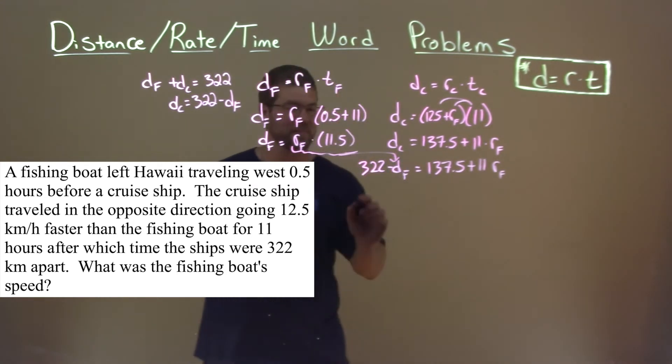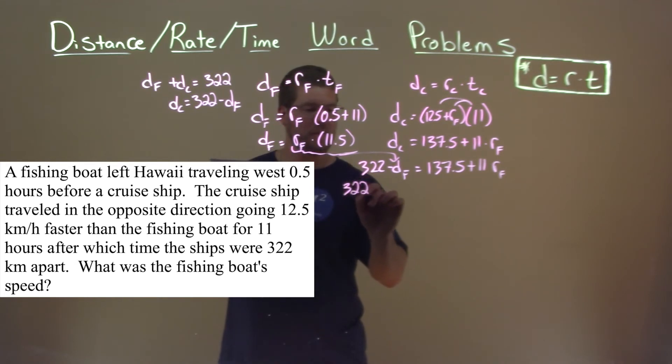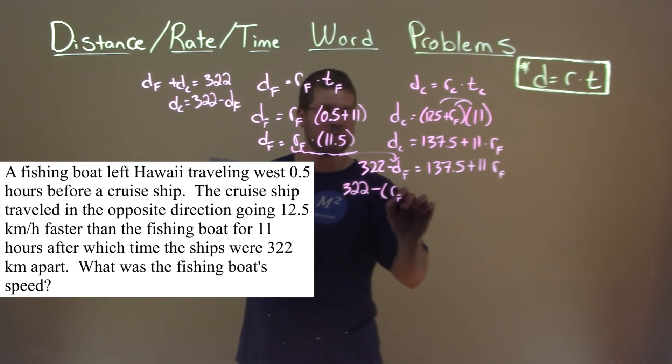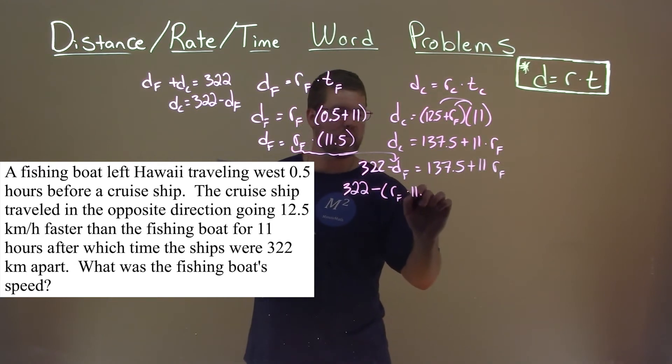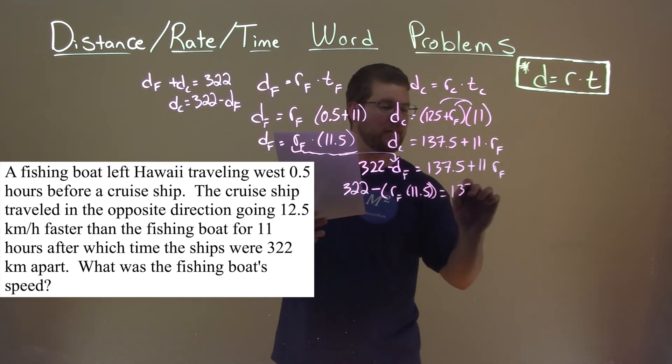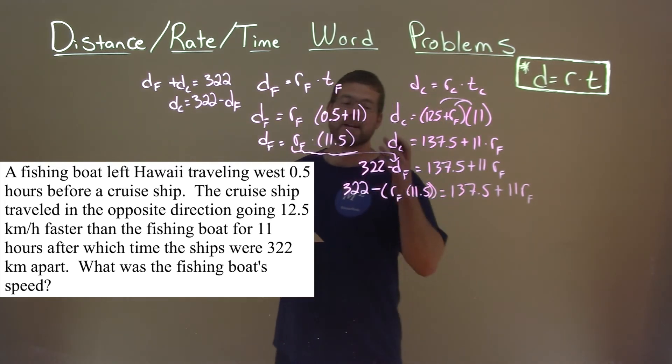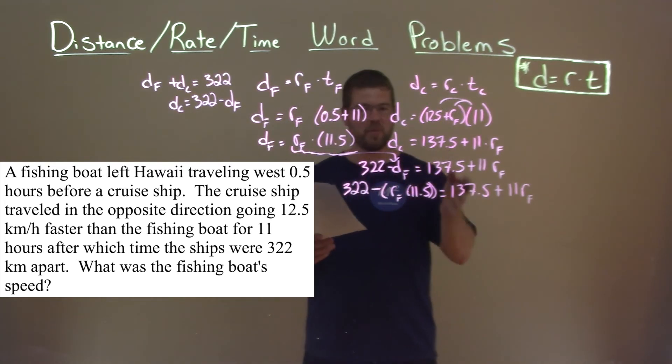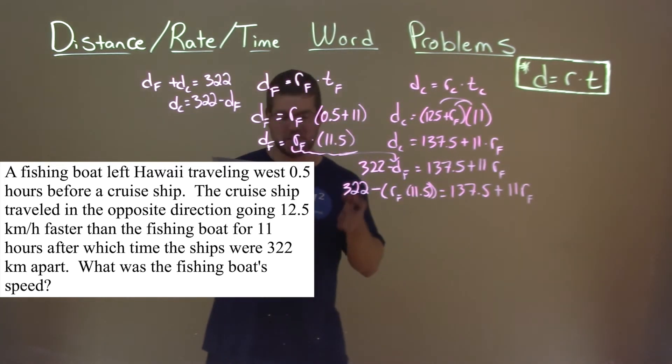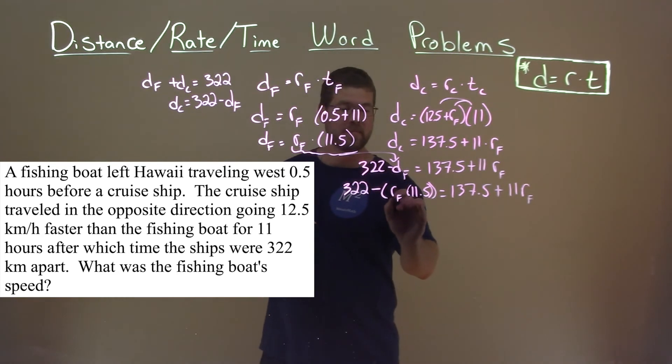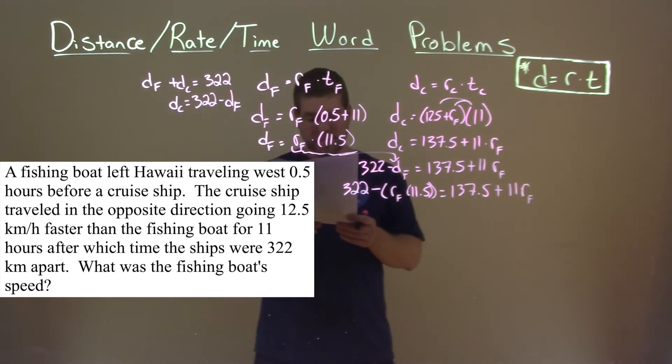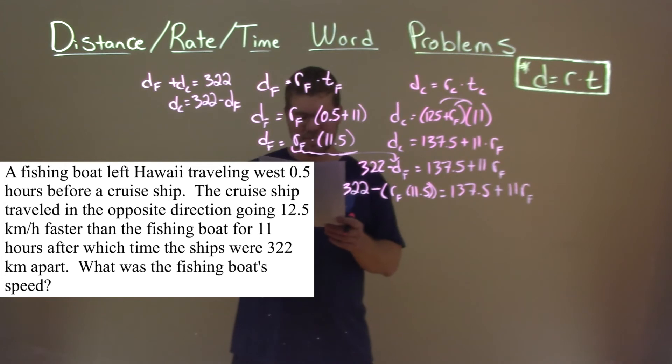So let's do that as well. We have 322 minus D sub F, which is R sub F times 11.5, let's write in parenthesis, double parenthesis, is equal to 137.5 plus 11 R sub F. And actually now we only have an equation with one variable, R sub F, which is actually the variable we want to find. So now we actually, after all of that, we can solve this. Okay, let's go clean this.